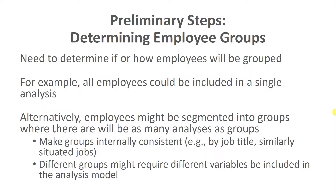When segmenting employees into groups for these analyses, we want to ensure internal consistency or homogeneity within each group. Ideally, this is done at the job title level. If we need to broaden things out, we want to include similarly situated jobs or jobs that are reasonably similar to one another. We want to go as narrow as possible and think carefully, group by group, about which variables to include in each model.